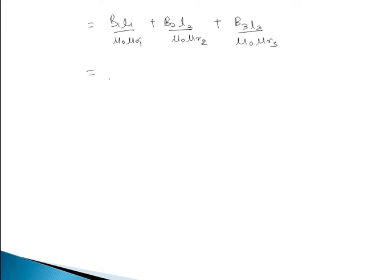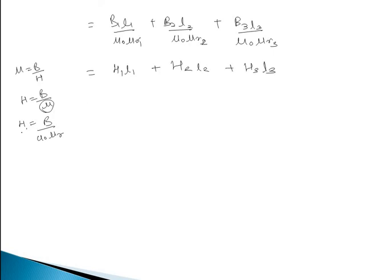The basic permeability formula is μ = B/H, so we can say H = B/μ, and since μ = μ₀μr, we have H = B/(μ₀μr). Substituting the value of H into the equation, we get F = H1·L1 + H2·L2 + H3·L3, where H is the magnetic field strength — explained in detail in a previous video on important terms and definitions of MMF.